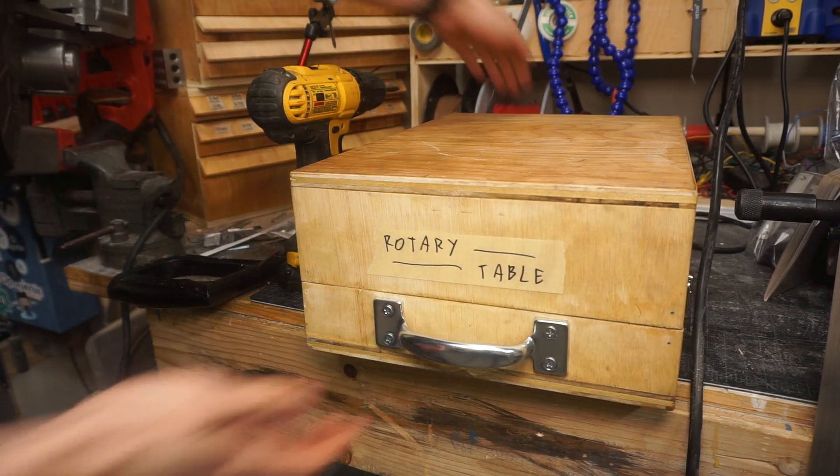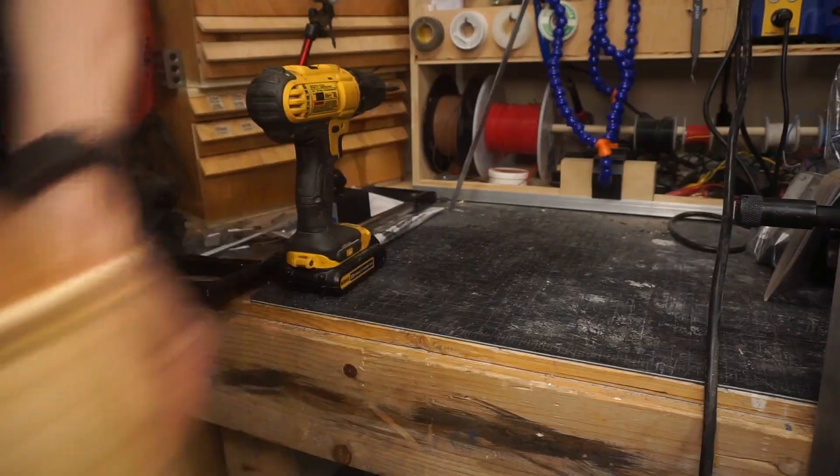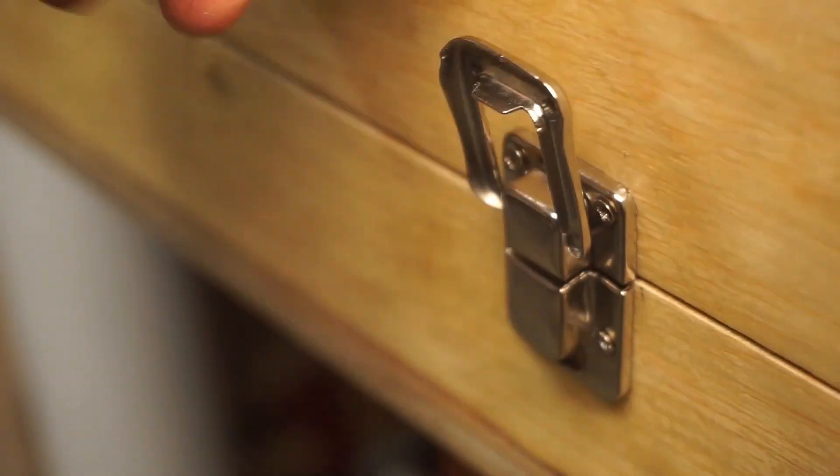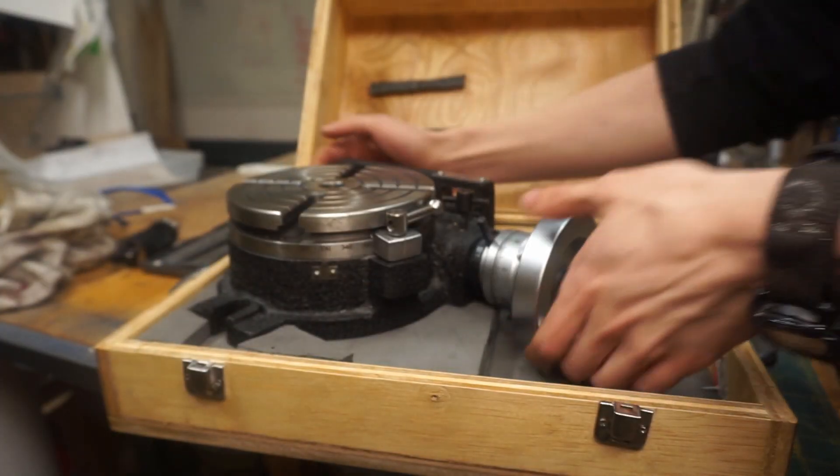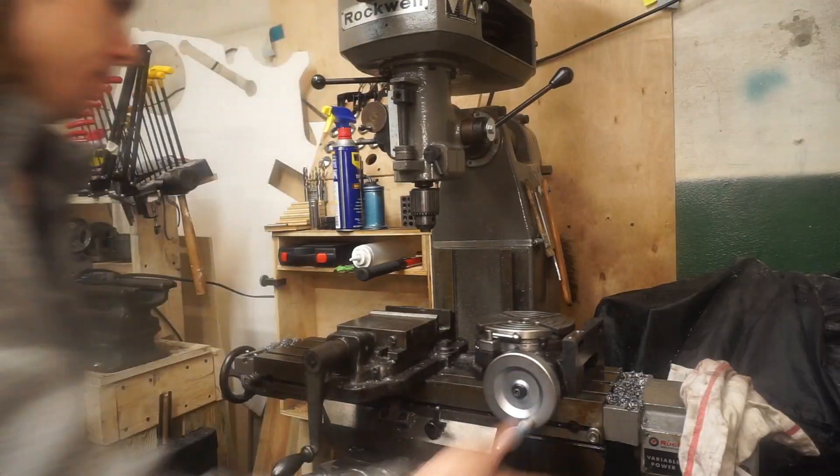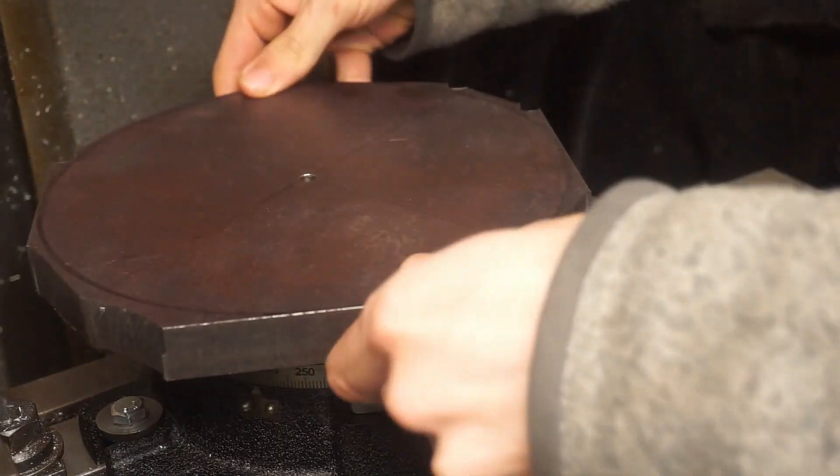To convert the blanks into circles, I'll use my rotary table. This is where I ran into some trouble. How was I going to clamp this big circle blank to the small rotary table?